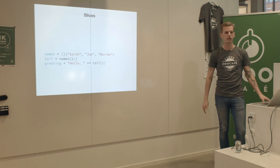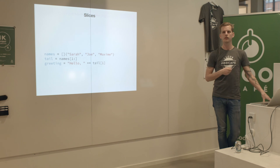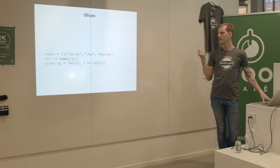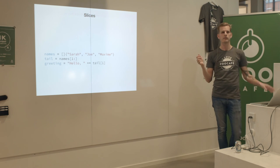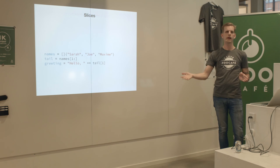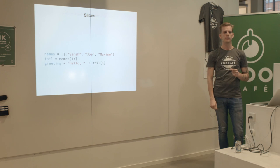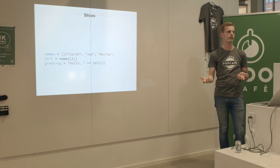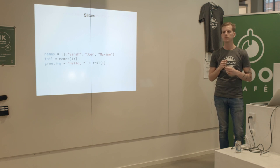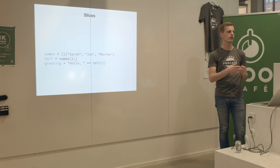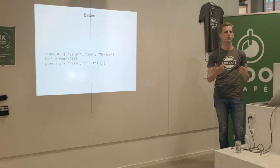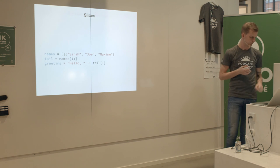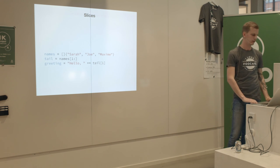Oden supports slices - these are the same as in Go. The Go documentation describes slices as a view into part of an array. Arrays in Go have a fixed length, typed by length and element type. Slices are typed only by their element type so they can have different lengths. You can receive a slice in a function with any length - like an ArrayList in Java.